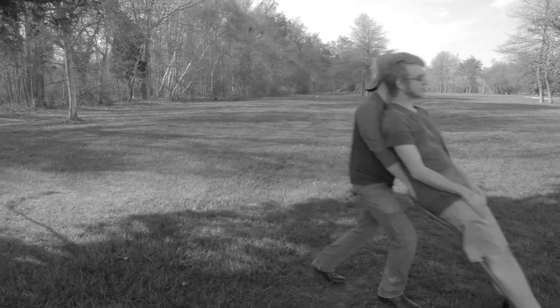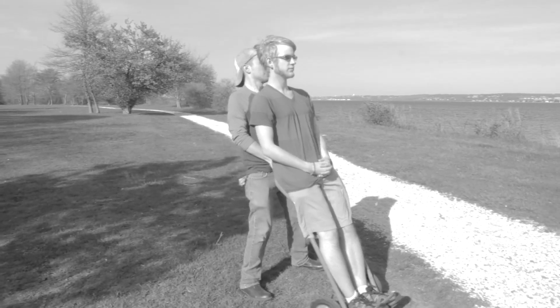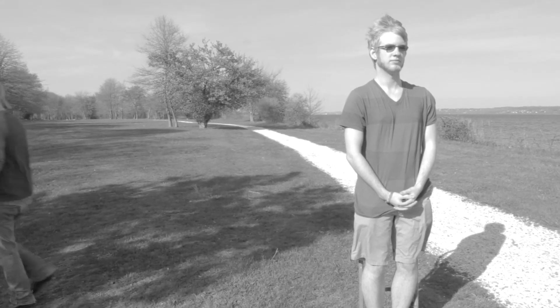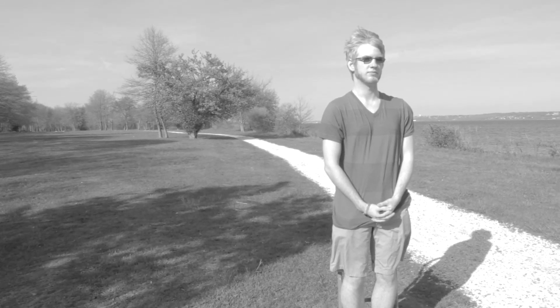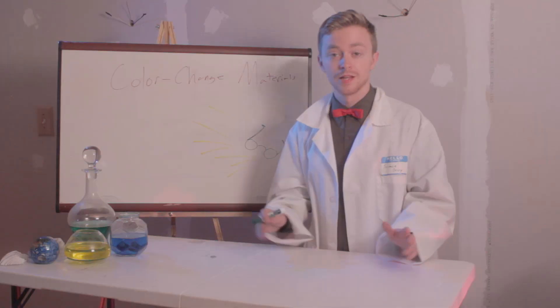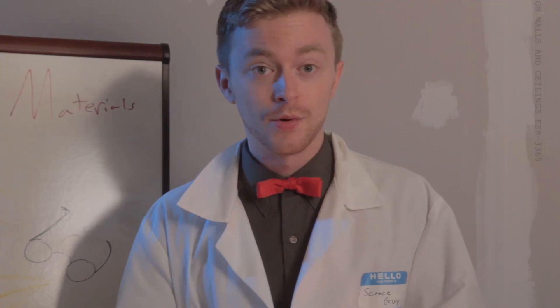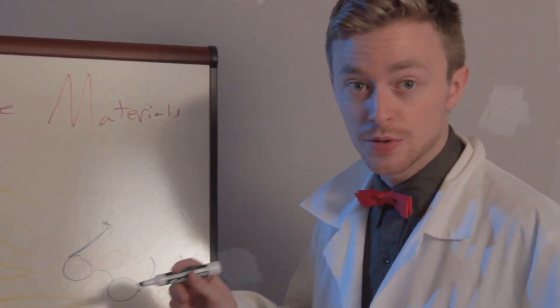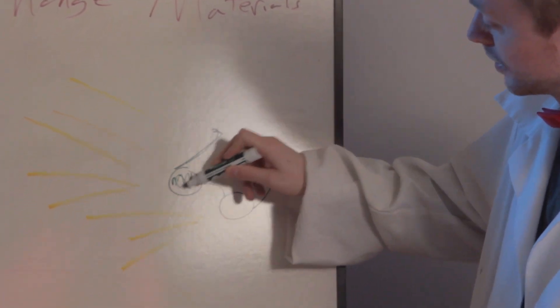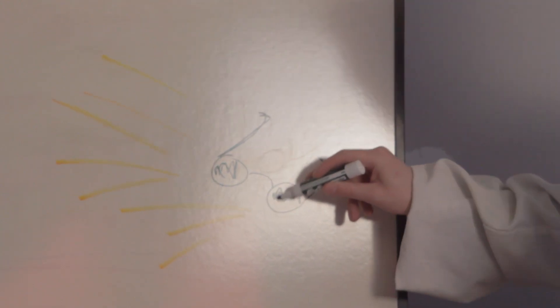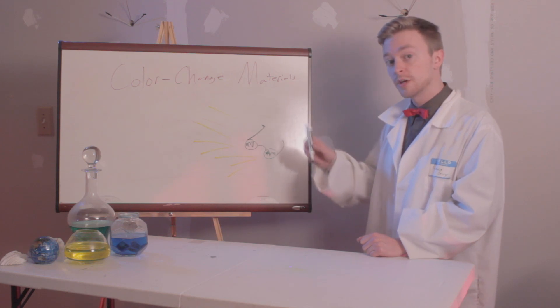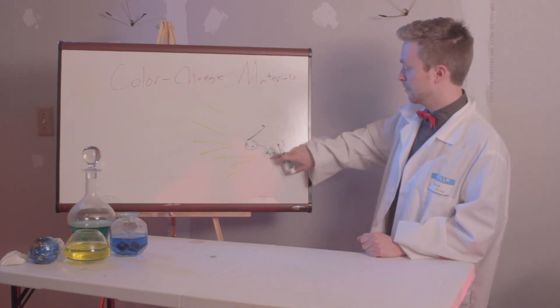This is Drew, and these are Drew's glasses. When exposed to the sun, Drew's glasses darken to protect his eyes. This is because Drew's glasses are made from smart materials known as color change materials. Specifically, they are made from a subclass called photochromatic materials. What happens with photochromatic materials is that when they're exposed to sunlight, there's a chemical reaction — in the case of sunglasses, it darkens the lenses. As soon as he goes back into a shaded area, after a moment or two, it reverts back and everything clears up for him.